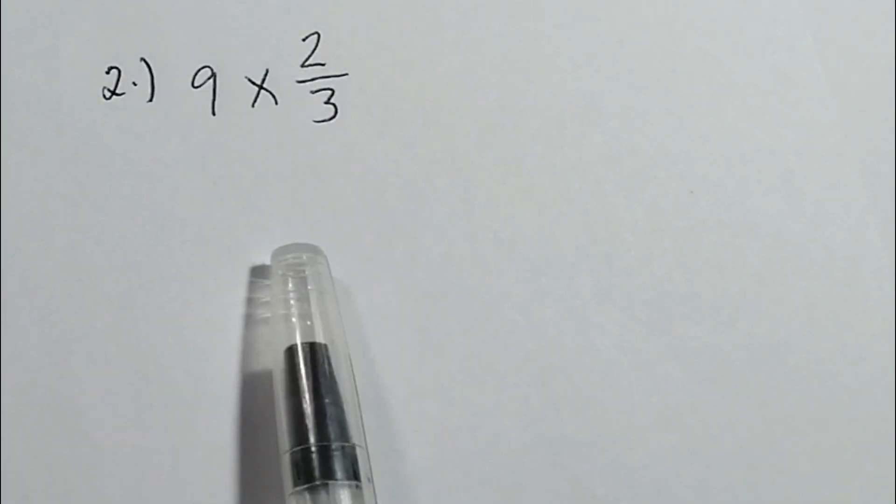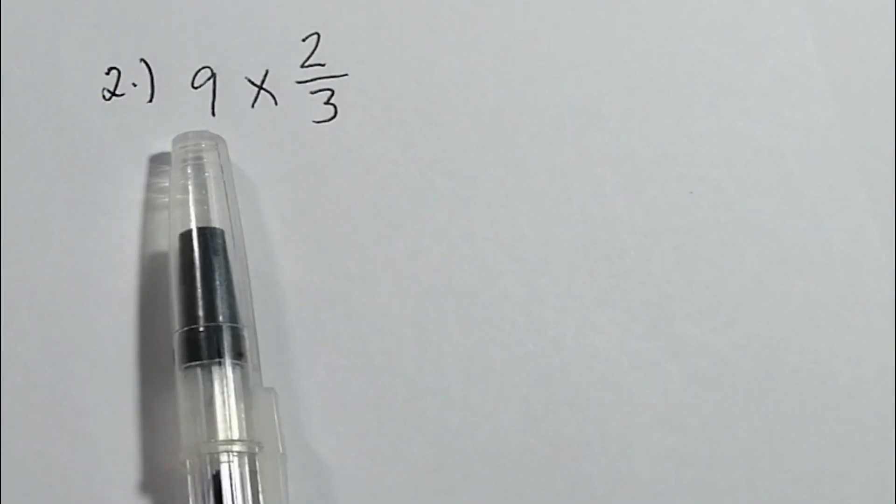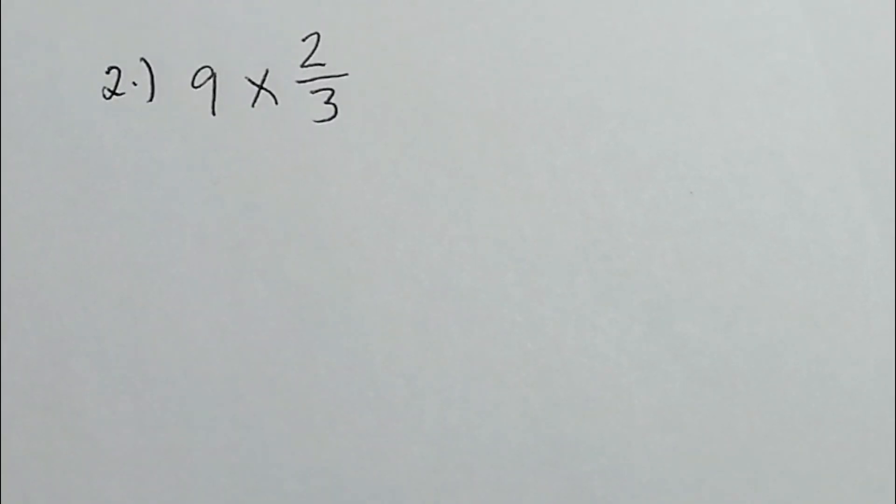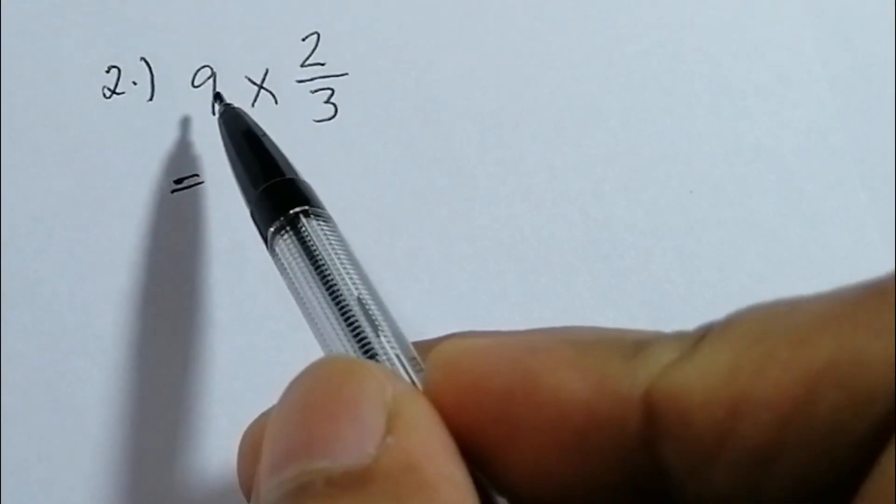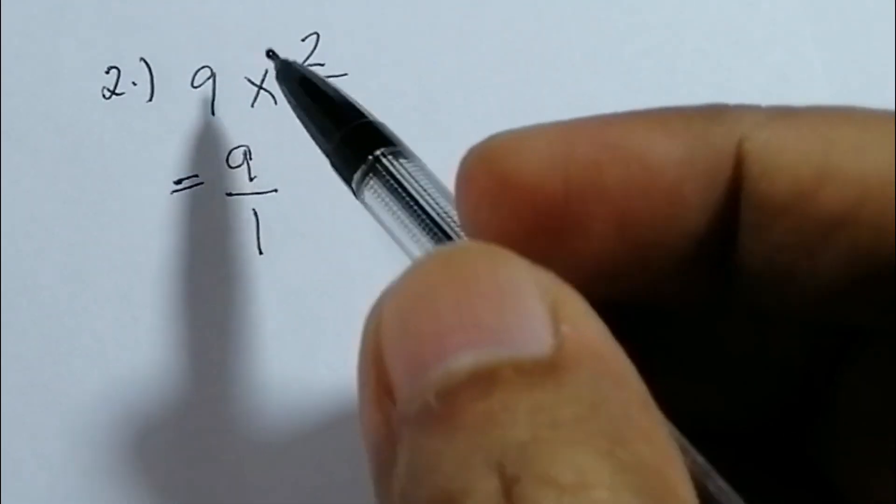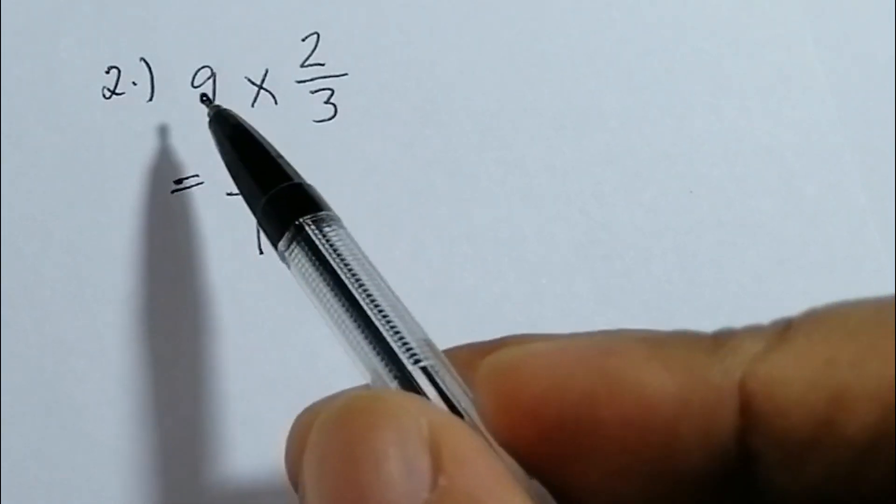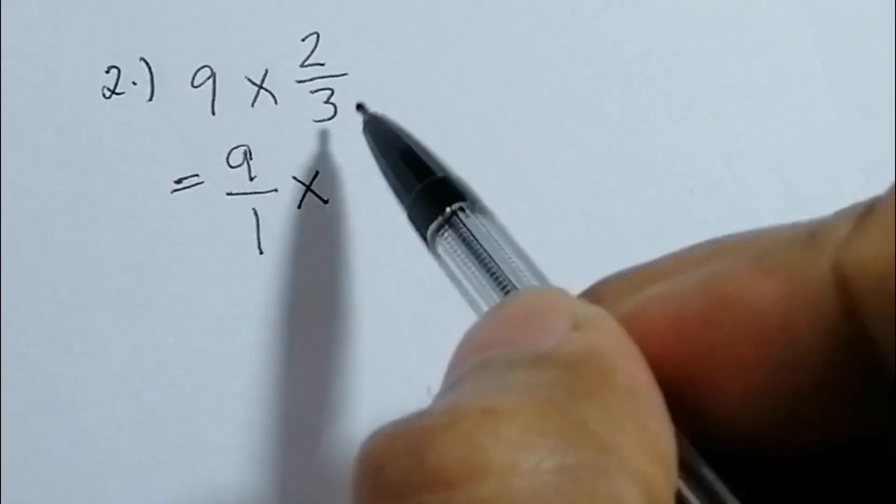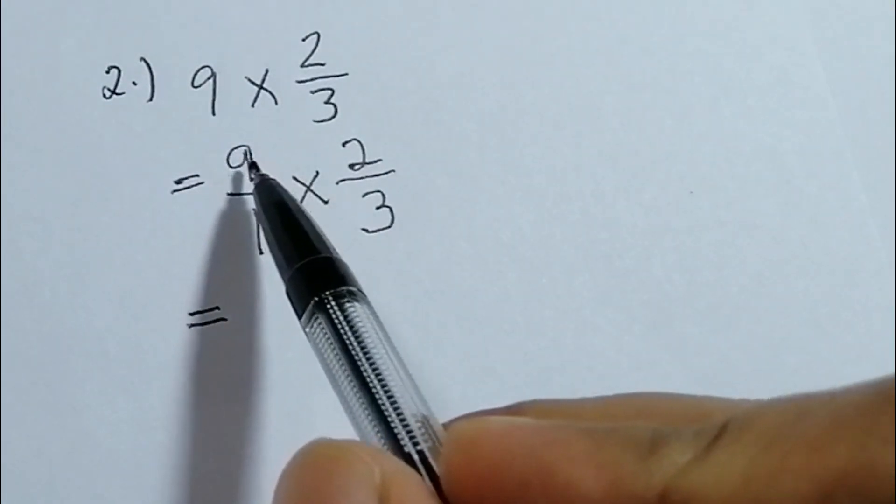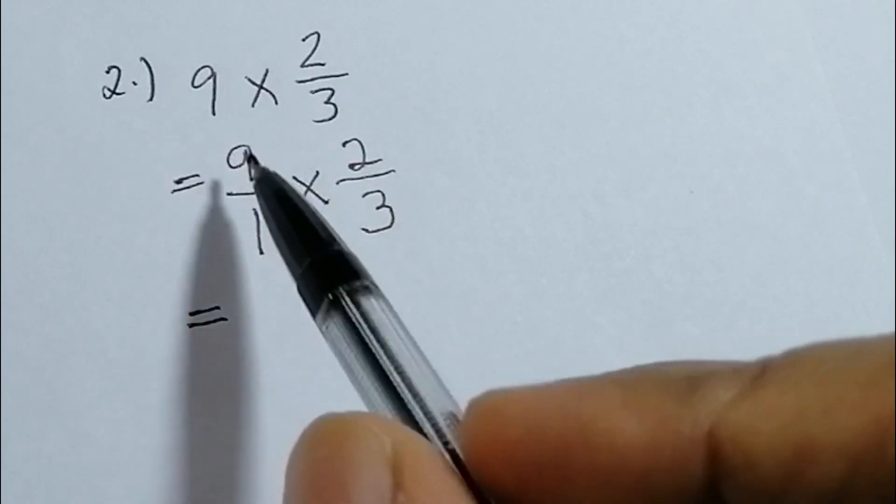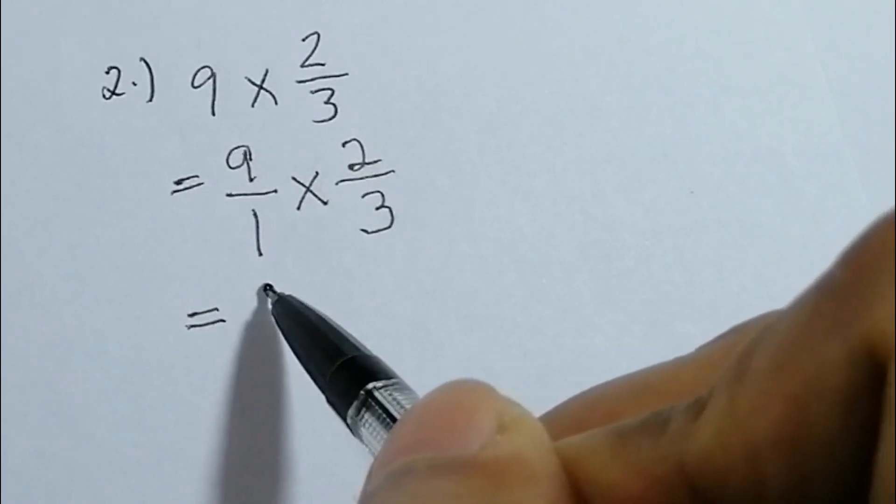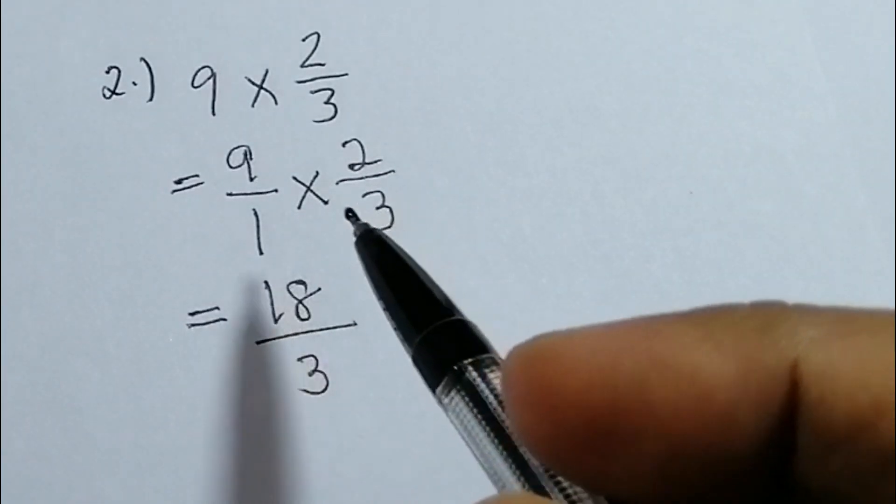Okay, next. Dito naman tayo. Whole number, multiply it by fraction, two-thirds. The first thing to do is, itong nine, isulat natin ng ganito, nine over one. So the same as nine divided by one is nine. Kasi meron tayong fraction, two-thirds. And imultiply natin ito, nine times two. Para balance sila. So gawin din natin itong parang fraction siya. Nine times two is eighteen over one times three.